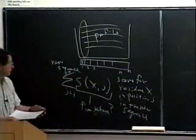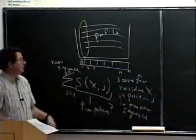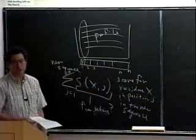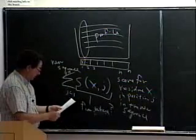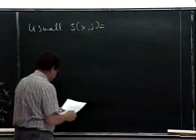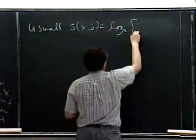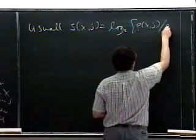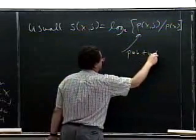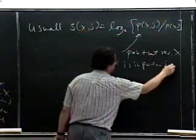What numbers are the right numbers to use for these S's in your score? Because ultimately what you want is that when the sum is a big number, you want to say yes, this new sequence is very similar and could have been generated in the same way that the sequences in the profile were generated. And if it's a low number, you want to dismiss that possibility. So usually S(X,J) is equal to log — and for certain reasons we often take log base 2 — of P(X,J) divided by P(X).